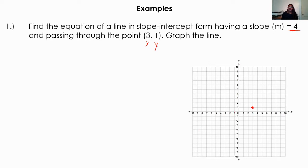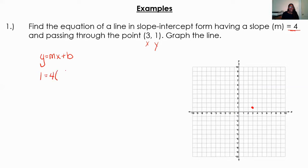They gave us our slope, which is equal to 4, and our X and Y values. So let's look at it algebraically. If I have my equation Y equals MX plus B, they gave us X, Y, and M that we can substitute into this equation. For my Y, I'm going to put a 1. For my M, it's going to be a 4. Since that M is being multiplied to the X, I'm going to replace X with 3. And then I bring down my plus B. So we're going to be solving this equation for B.